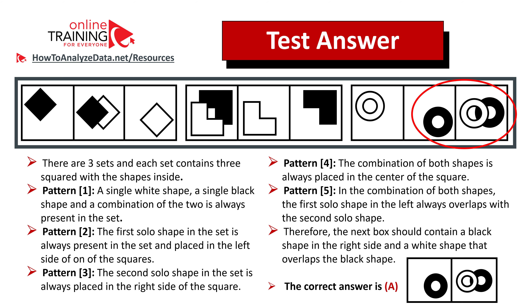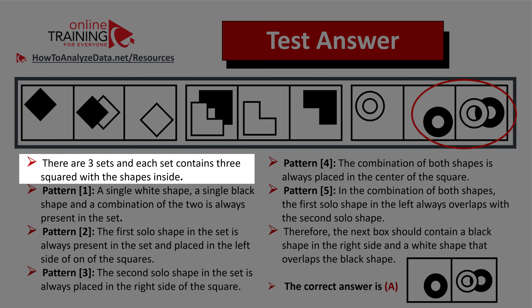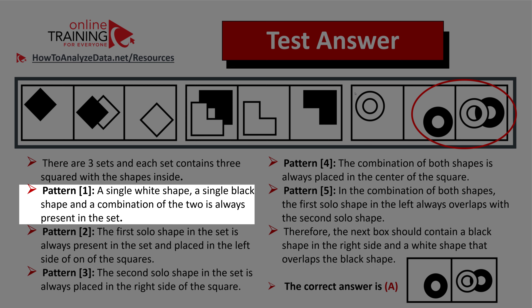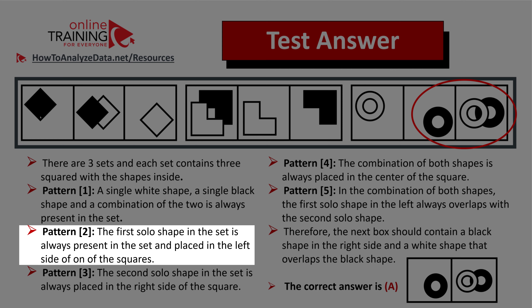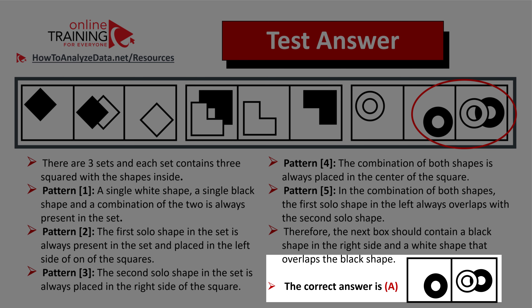Let's look at each one of the patterns. We have three sets and each set contains three squares with shapes inside. The first pattern is that a single white shape, a single black shape, and a combination of two is always present in the set. The second pattern is that the black solo shape is always positioned in the left part of the square inside the set, the white shape is always positioned on the right part, and the two-shape grouping with black and white shapes is always in the middle. Once you recognize all these patterns you can quickly find the answer — it will have the black circle on the right part of the square and the combination of white and black circles in the middle.